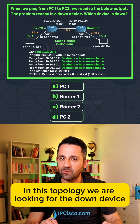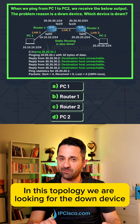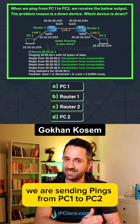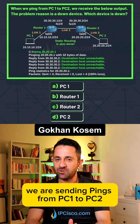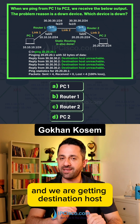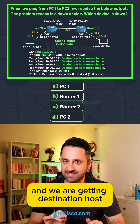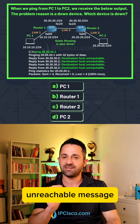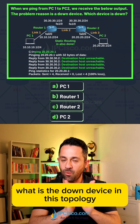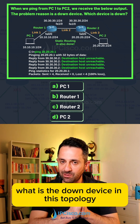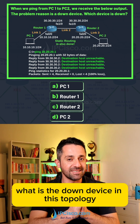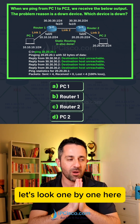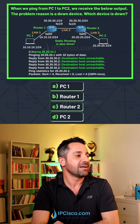In this topology we are looking for the down device. We are sending pings from PC1 to PC2 and we are getting a 'destination host unreachable' message. What is the down device in this topology? Let's look one by one.